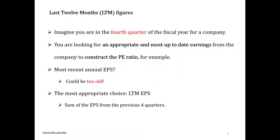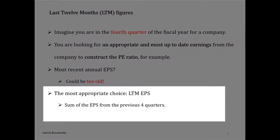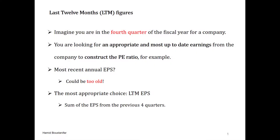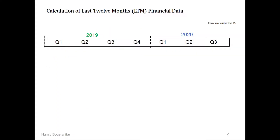The bottom line is that many things could have happened since the last annual filing, especially if you are already several quarters away from that last annual filing. To fix this issue, we should compute the LTM figures like the last 12 months earnings per share. The last 12 months earnings per share is the sum of the previous four quarters' earnings per share. Of course, when the most recent quarter is the fourth quarter of the company's fiscal year, there is no need to compute the LTM numbers since the LTM number equals the number in the annual filing.